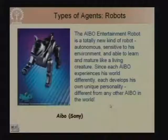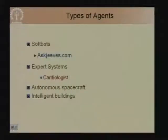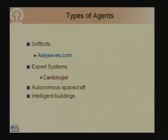There is also the AIBO entertainment robot sold by Sony. This robot is a humanoid robot; they claim it is autonomous, sensitive to its environment, can learn, has different stages of its life, and can be personalized according to the environment in which it grows up. There are also other types of agents like soft bots or software agents; for example, sites like askjeeves.com can be considered a software agent, and there are medical expert systems such as the cardiologist which are also software agents.